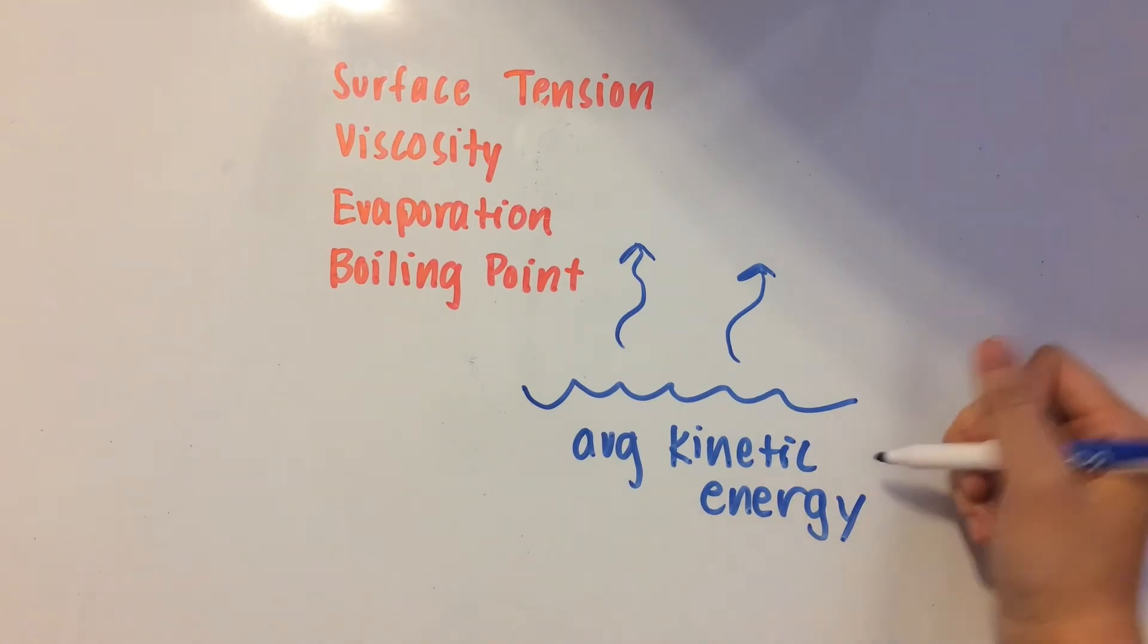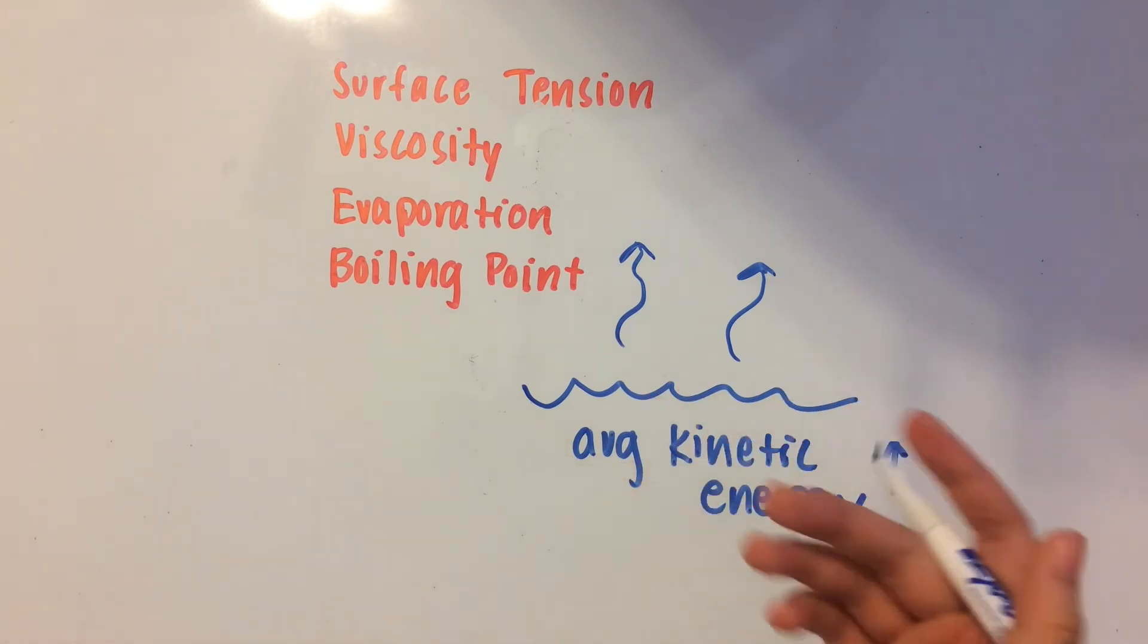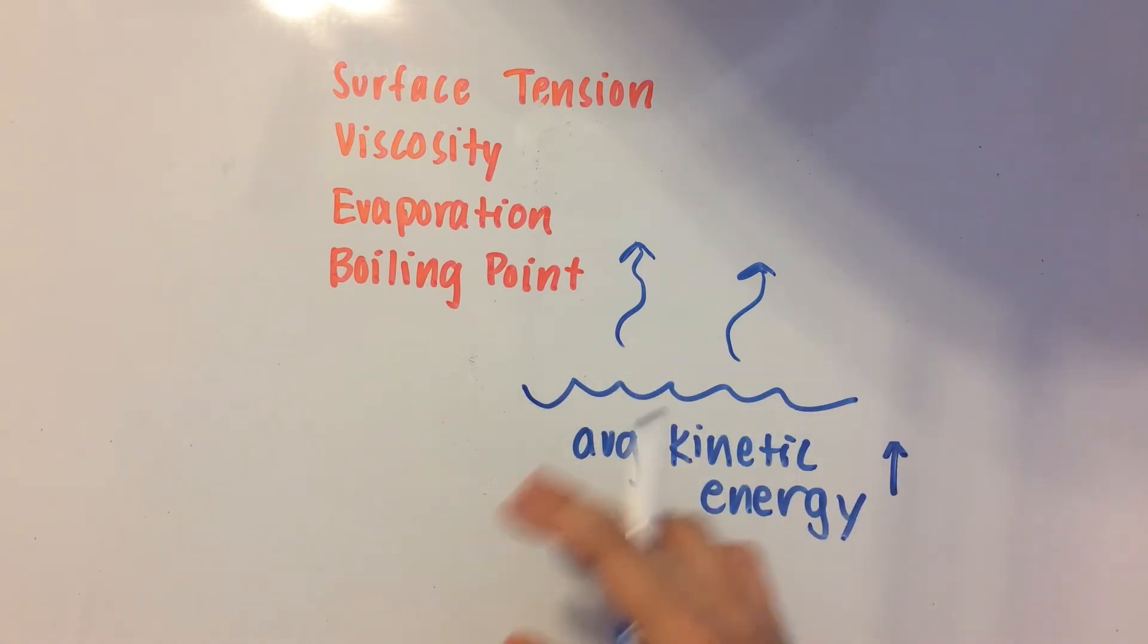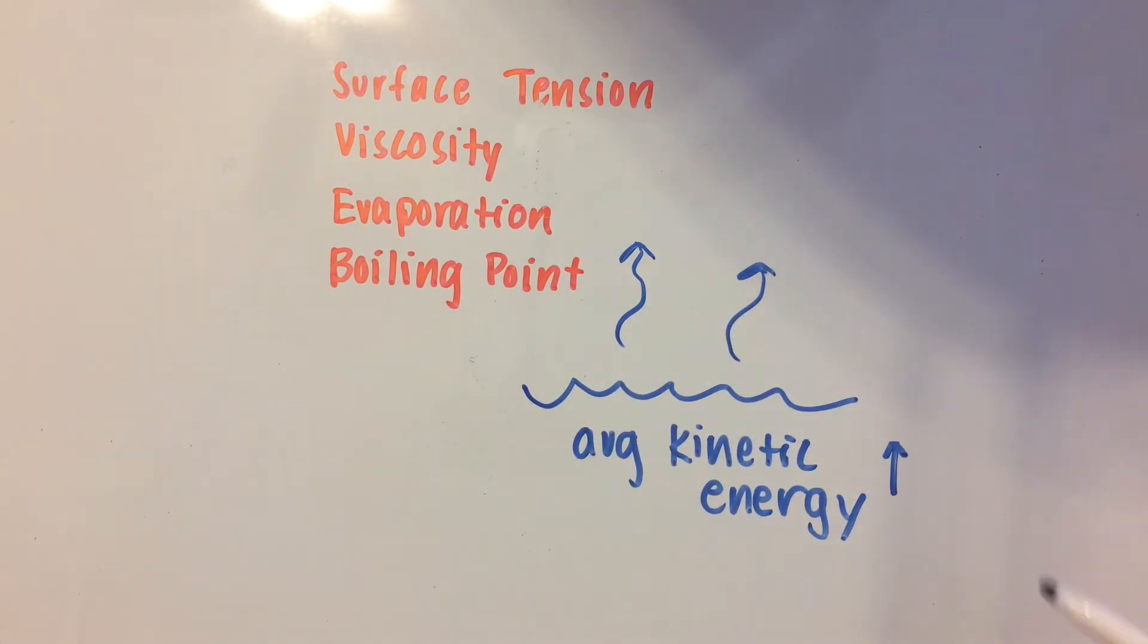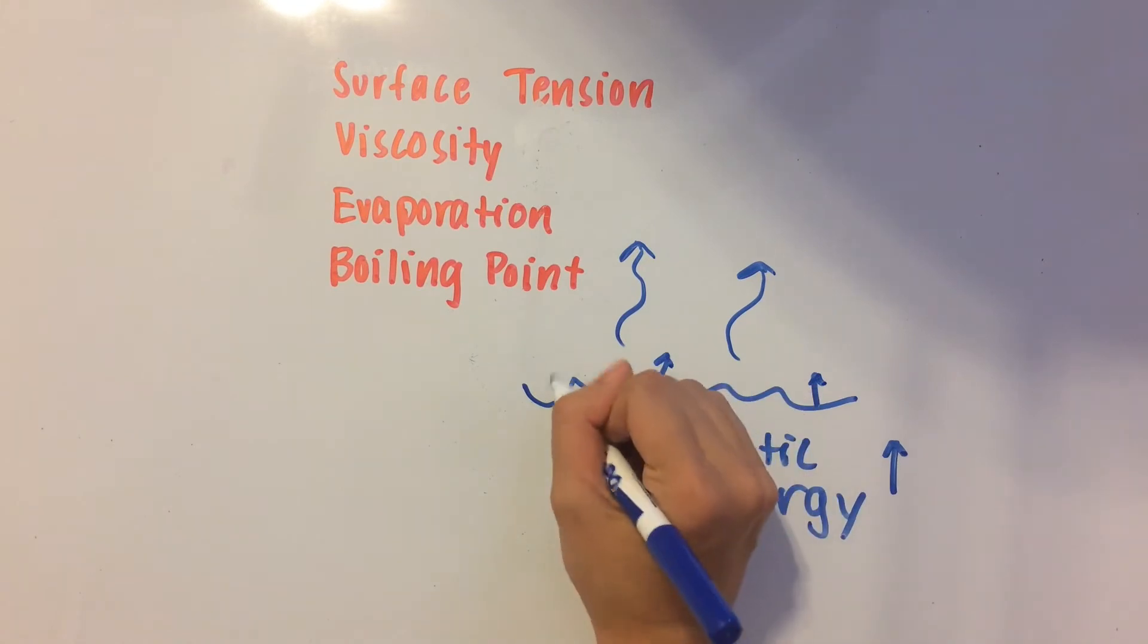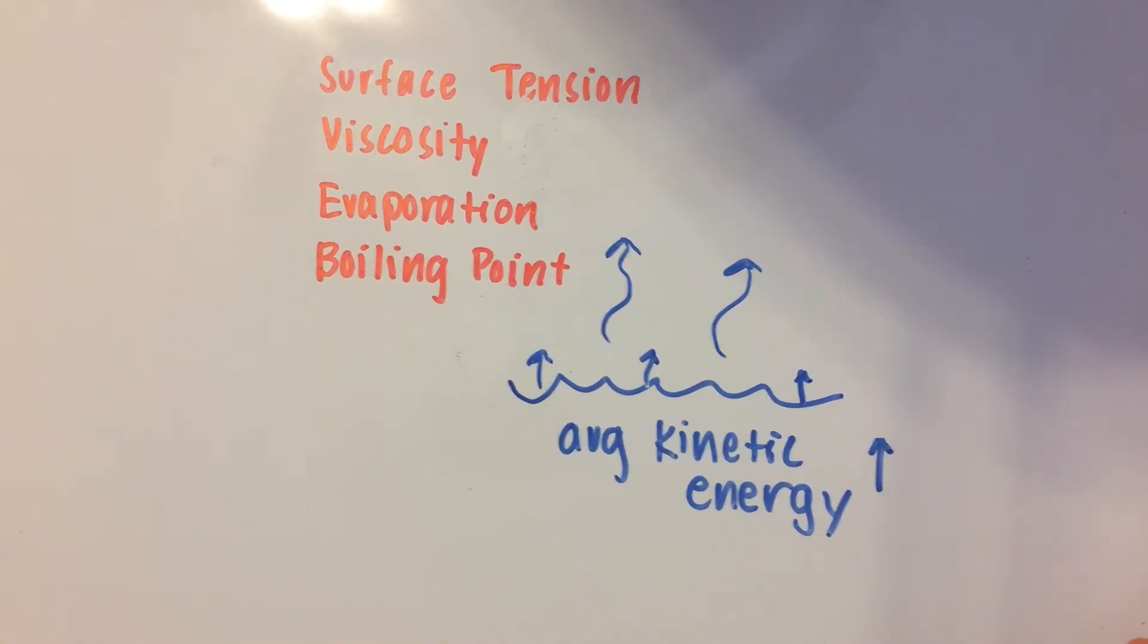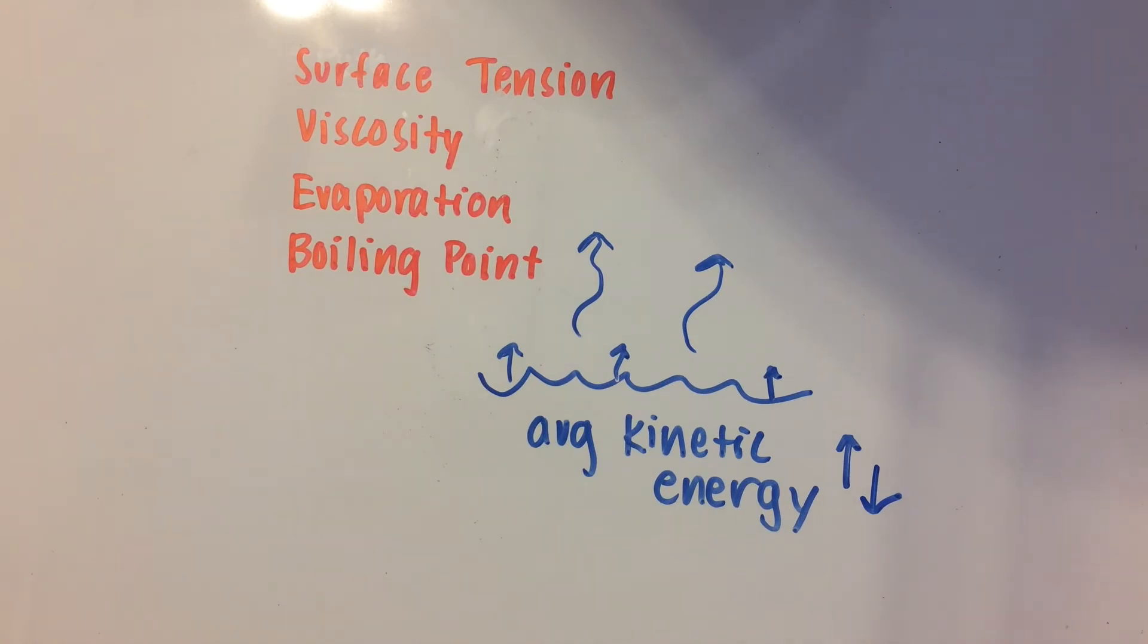When you heat it up, it's obviously going to increase because the energy from whatever source you're heating the water with is going to make the water molecules go faster, and some of the fast ones are going to go out. In fact, the fastest water molecules are going to escape and go out into the open air, and that, in turn, is going to decrease your average kinetic energy.